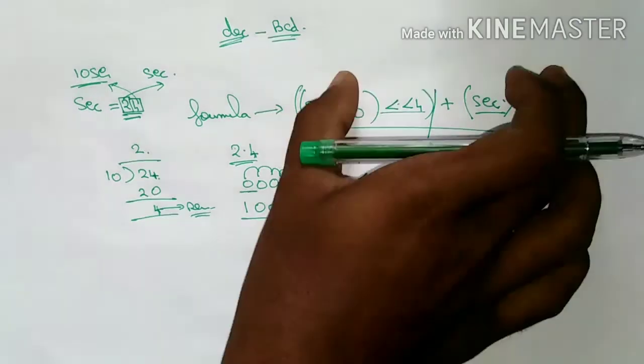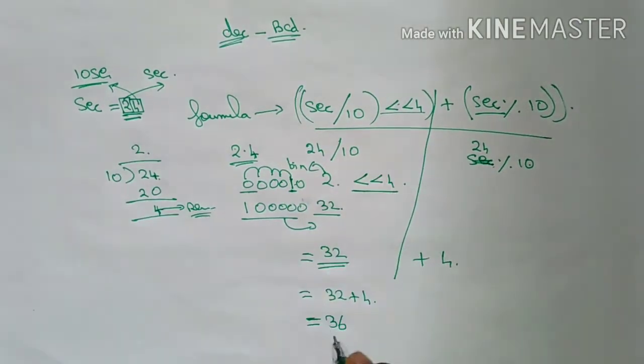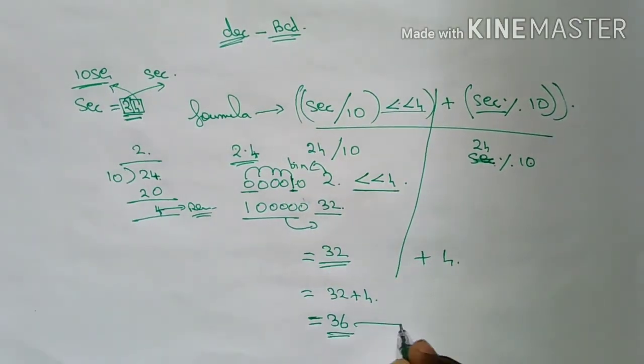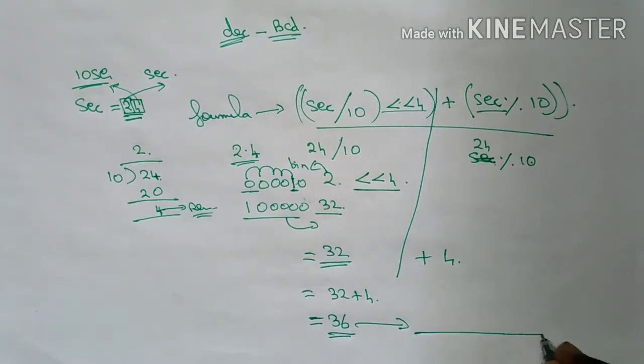So in the formula, the 24-hour process gives 36 as the value. So 36 is the corresponding binary value.